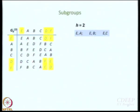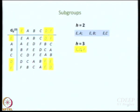So I have 3 subgroups of order 2. And as we have seen, E,D,F forms a subgroup of order 3. Look at the highlighted elements — the group E,D,F: here you have E, D, F and then F here, D here, and E. So E,D,F also form a subgroup, giving us a subgroup of order 3 — small g equal to 3 — and subgroups of order small g equal to 2.